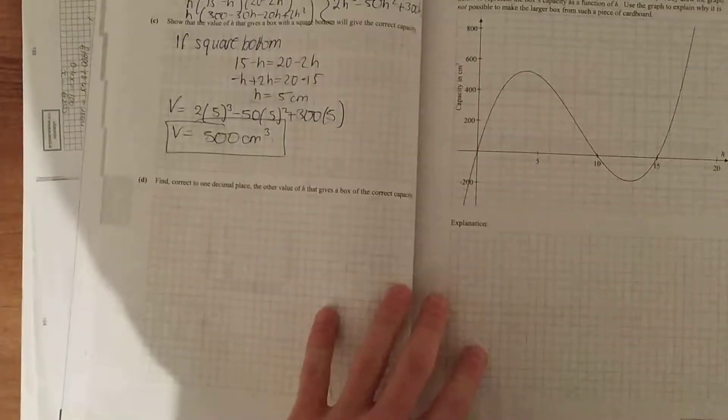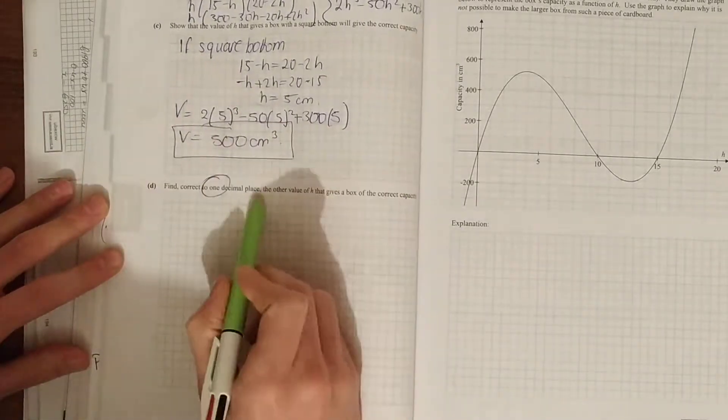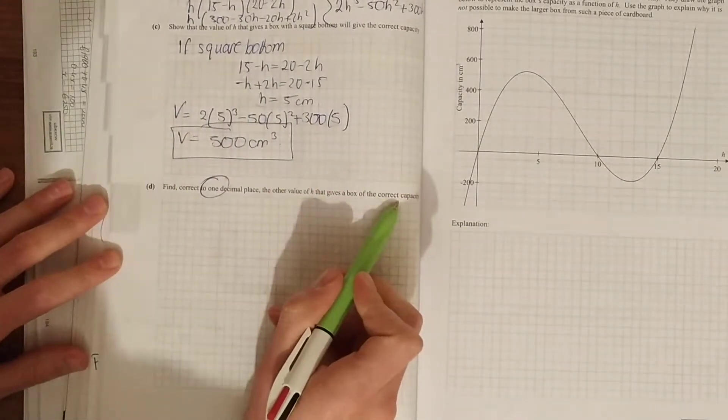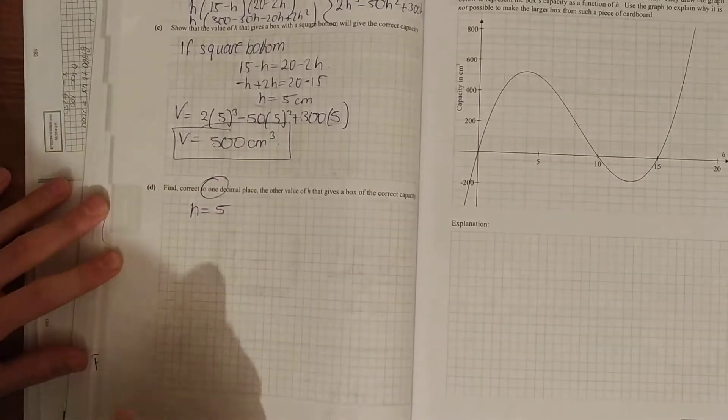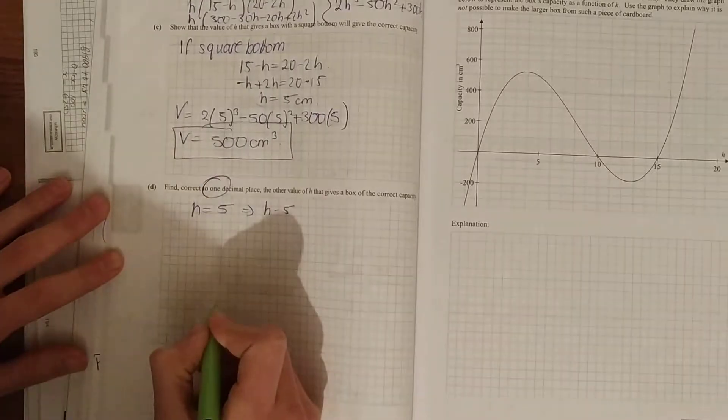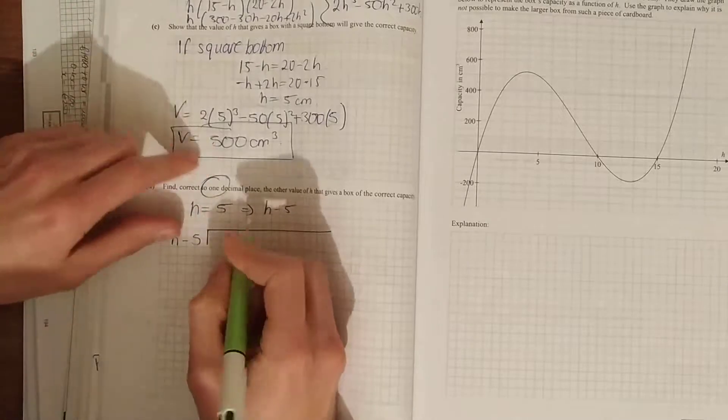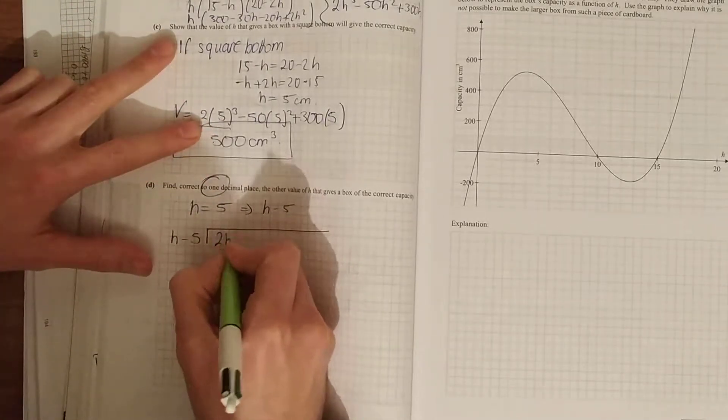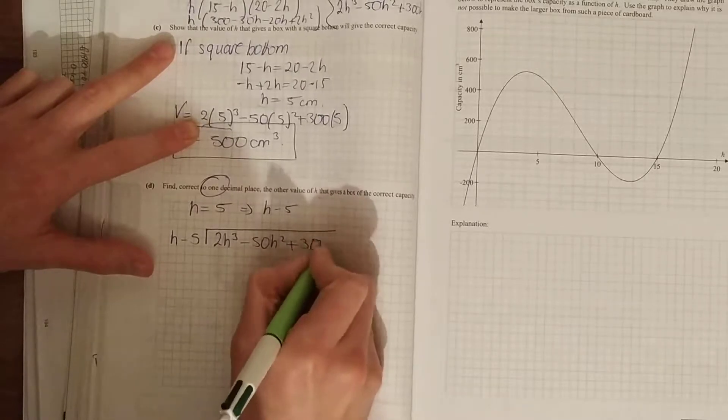Part D, to one decimal place, the other value of h that gives the correct capacity. So if we know one of the values of h, like your root is h equals 5, that means our factor is h minus 5. So here's just simply your factors here, your long division. So h minus 5 into your 2h cubed minus 50h squared plus 300h.